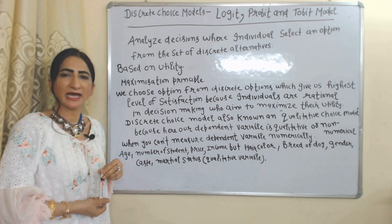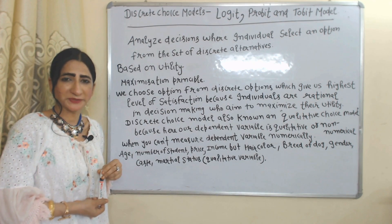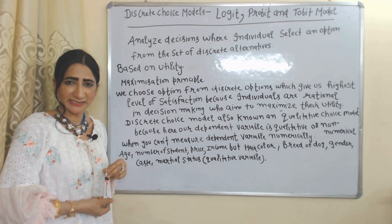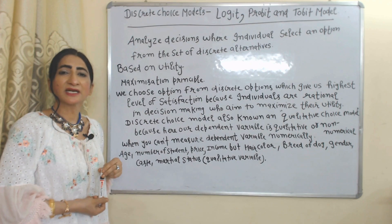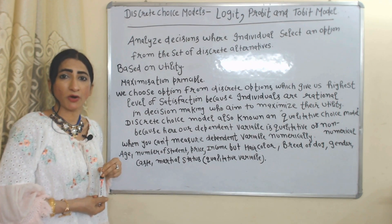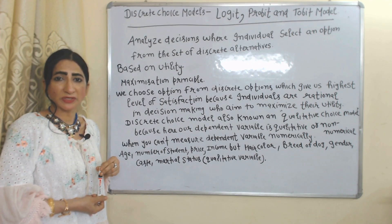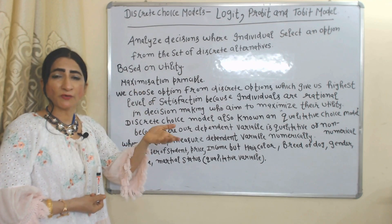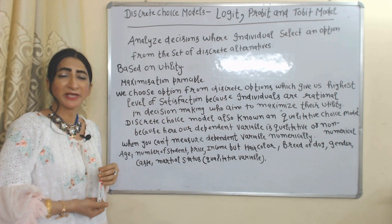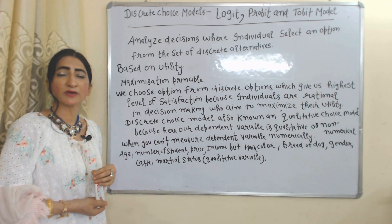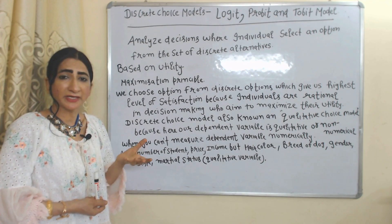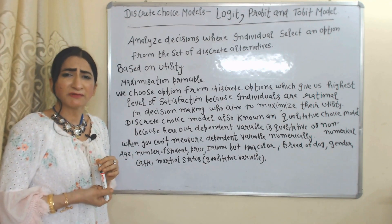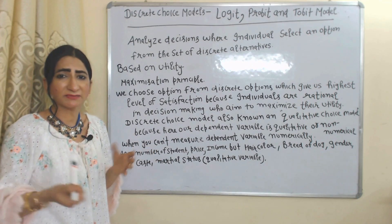Discrete choice models analyze situations where individuals select an option among a set of discrete alternatives. Discrete alternatives means different and separate options — we select one option from a set of different and separate options. Discrete choice models are based on the principle of utility maximization, meaning an individual will select the option which provides maximum satisfaction, because the individual is rational.